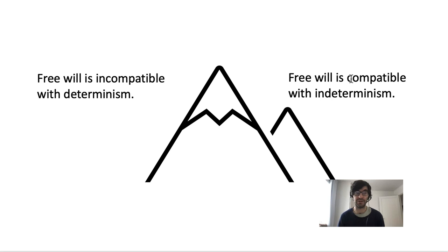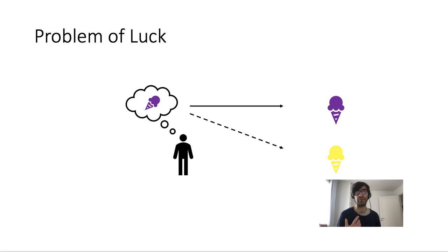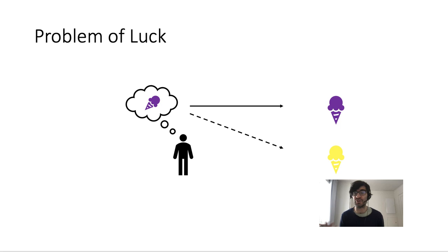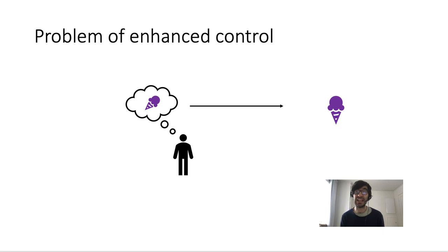Let's go over these problems very quickly. The first problem is one we've already touched on — it's called the problem of luck. The idea is simply that if indeterminism governs your decision such that it's purely a matter of chance whether you decide to order raspberry ice cream or vanilla ice cream, then it's very hard to see how your action could actually be free or up to you, because it just seems to be a matter of luck how the chances work out.